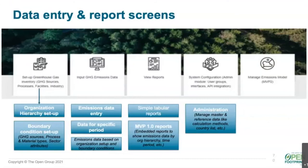Each of these comes together: there is an ability to do organization hierarchy setup, boundary condition setup, and data entry for a specific period — which is very important from a duration and time scale standpoint. Simple tabular reports are available to generate data and see the organization hierarchy and corresponding emissions data. And then there is the administration element. That covers the reference architecture, the underlying data platform for MVP 1.0, and how the default UI allows the end user to put in that data.